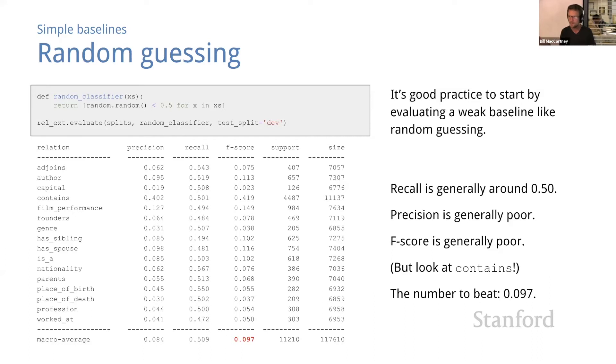Precision on the other hand is generally quite poor because of the instances where we predict true, which are basically a random sample because we're just flipping a coin, relatively few are actually true. And actually you can tell that by looking at the ratio between support and size. The ratio between support and size is how many of the instances are actually true. So when we're tossing a coin, the precision should be right around the ratio between support and size.